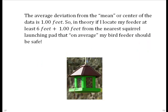So, what does that mean? It means that the average that my individual squirrel's jumping distance deviates from the center of the data is one foot. So, in theory, if I locate my feeder at least 6 feet, the average plus one foot, the average deviation from the nearest squirrel launching pad, on average, my bird feeder should be safe.